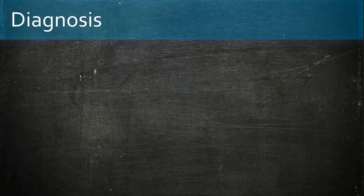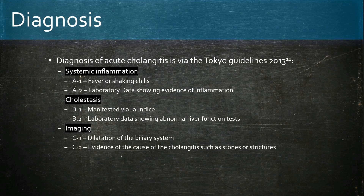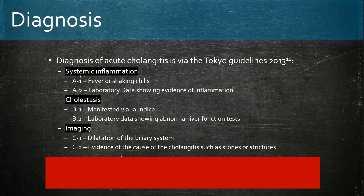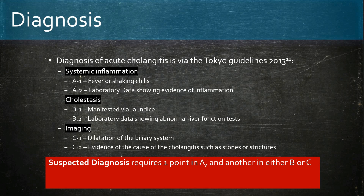Diagnosis of acute cholangitis is via the Tokyo Guidelines 2013. This consists of three sections: systemic inflammation, cholestasis, and imaging. Each section has criteria to meet for scoring a point. For example, cholestasis can be scored if the patient has jaundice or laboratory data showing abnormal liver function. A suspected diagnosis requires a point from systemic inflammation and another from either cholestasis or imaging. A confirmatory diagnosis requires one point from all three sections.